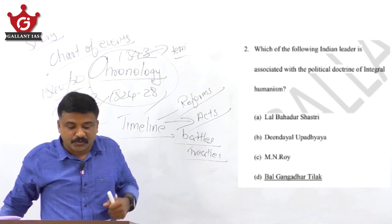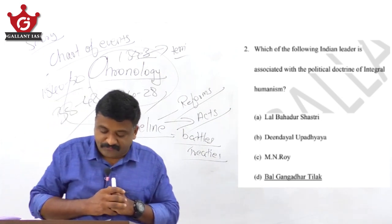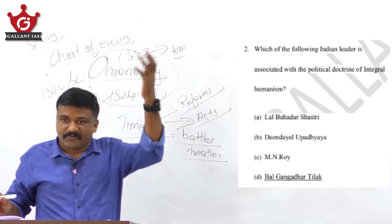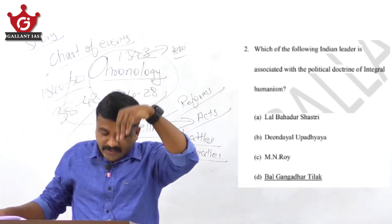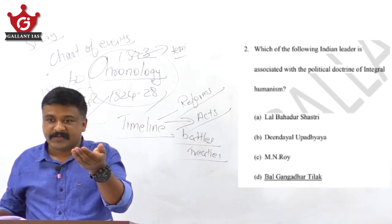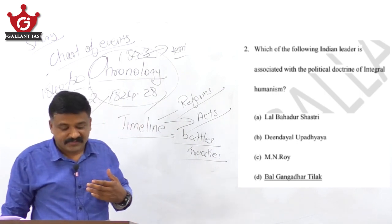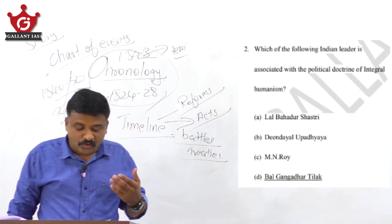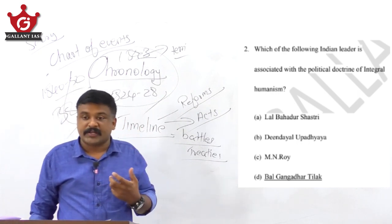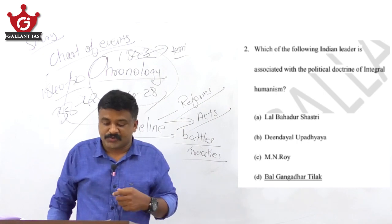Moving on to question number 2: Which of the following Indian leaders is associated with the political doctrine of integral humanism? He was the founding father or a great leader of the Bharatiya Jana Sangh, the forerunner of the BJP party. That person was Deen Dayal Upadhyaya, whose popular political doctrine is called integral humanism.